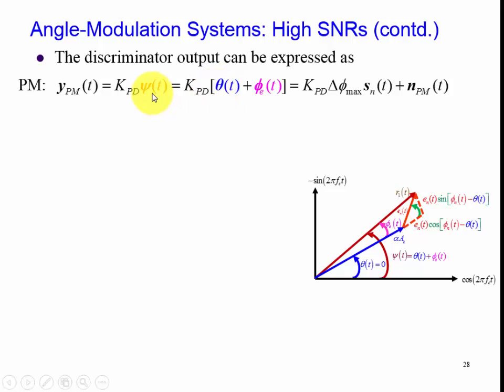We can see that the psi, which is the resultant signal consisting of signal plus noise of the angle, consists of two parts: the signal plus the noise error. We can replace this theta of t with delta phi max multiplied by the normalized signal.